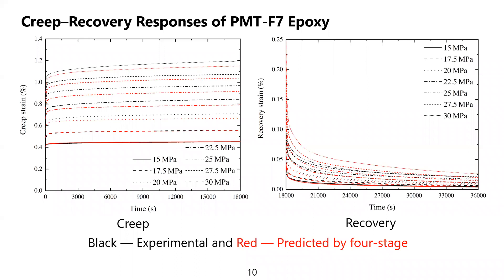This slide shows the creep recovery responses of PMTF-7 epoxy, where the black curves are experimental and the red curves are predicted by 4-stage time integration. PMTF-7 epoxy is a toughened epoxy widely used in high-strain composites. We calibrated its viscoelastic parameters via a series of creep recovery tests and used them in our simulations. The predictions for 15 MPa and 75 MPa match the test data. The other predictions slightly deviate, with one cause being the accumulation of errors, and another being that the calibrated stress-dependent functions are not accurate enough.